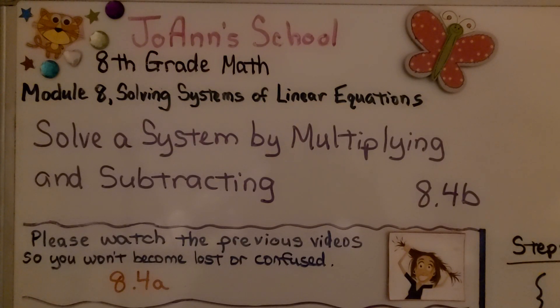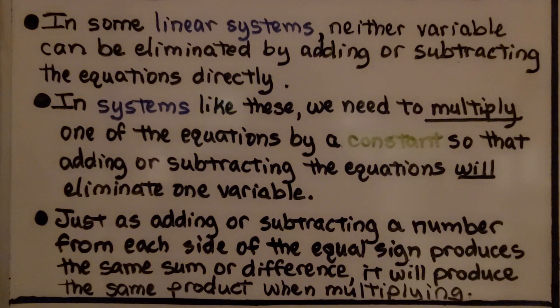Solve a system by multiplying and subtracting. We're still working on the elimination method. This is 8.4b. I read this in the previous video. This is for those of you who missed that video. If you saw it, you could skip this part.